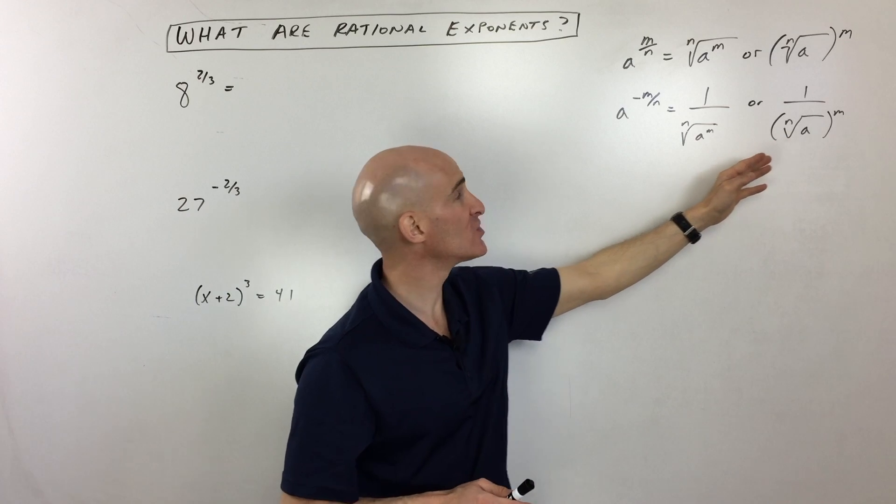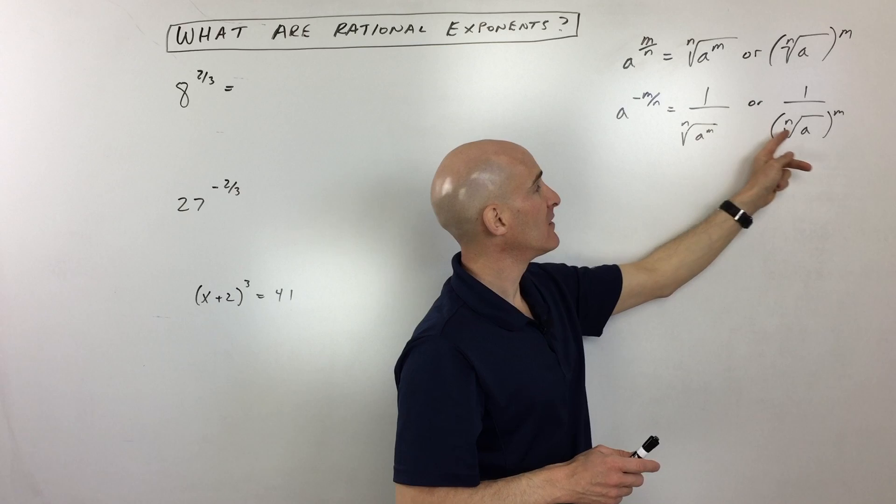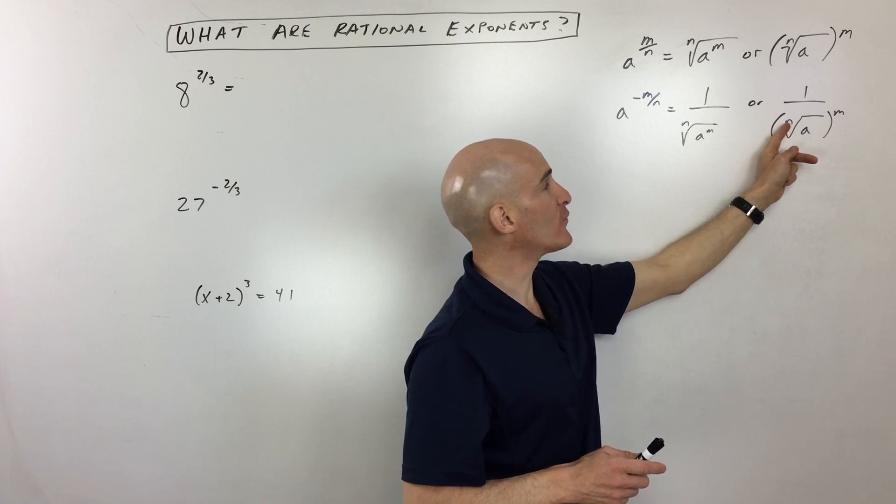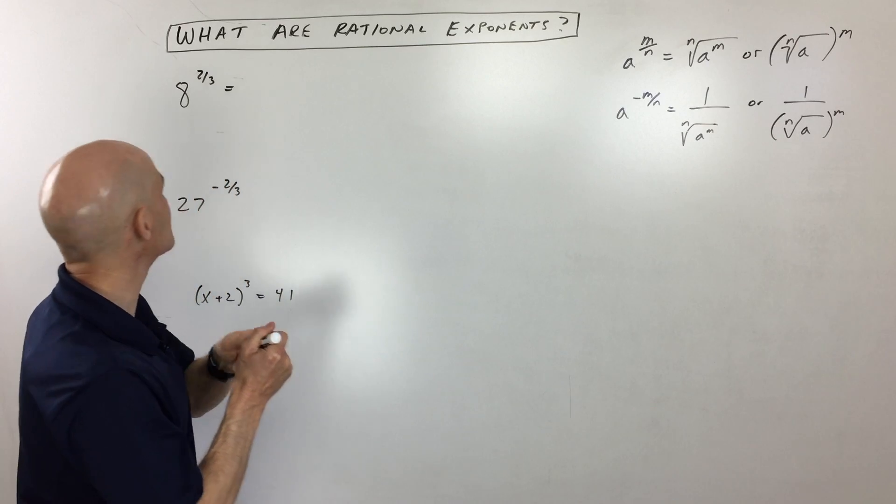Now, you can see there's two different ways to do this. One way is to take the power first and the root second. The other way is to take the root first and the power second. It sounds confusing, but let's look at a couple examples and try to simplify this.